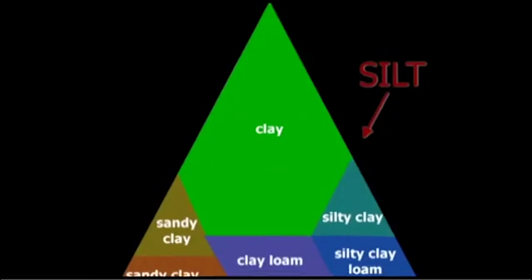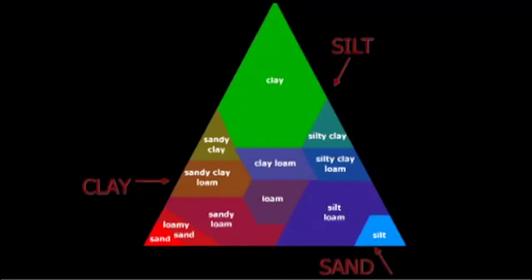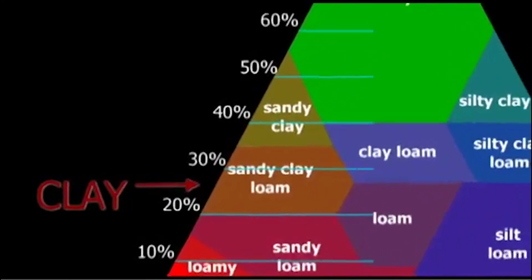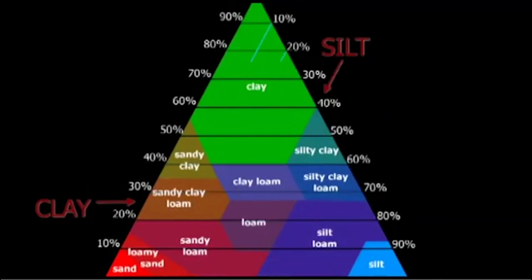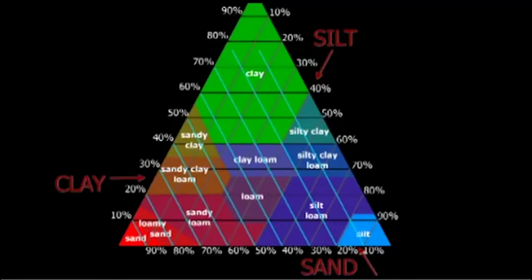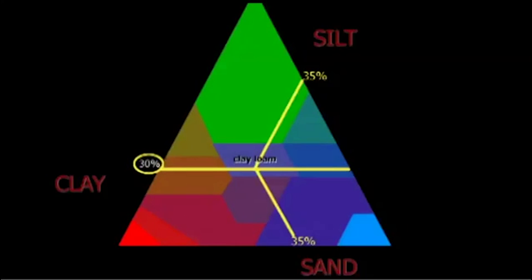This triangle is a handy way to show how different proportions of particles result in unique soil types. The percentage of clay in the soil is indicated along the horizontal axis, silt from the top down and sand from the bottom up. For instance, a soil with 30% clay and equal proportions of silt and sand is called clay loam.